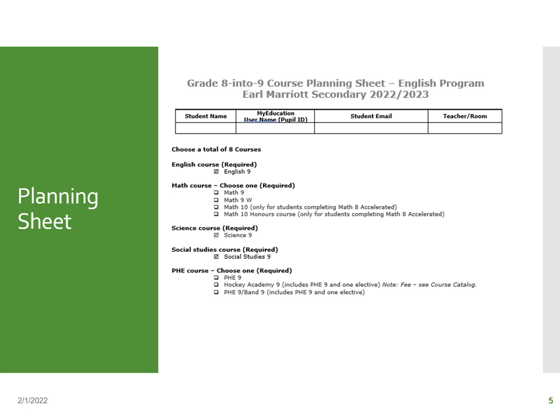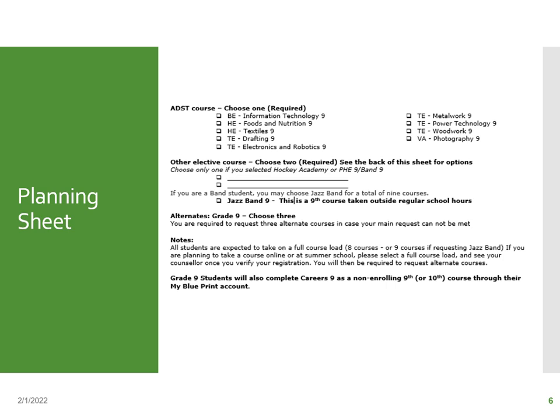You also have the option of doing PE with Band, and again that checks off two spots as well — PE 9 with Band because they alternate. Moving down the sheet, you'll see the ADST course section. You need to choose one of these, as it satisfies the ADST credit requirement. After that, you'll choose two more electives from the back of your course selection sheet — but only if you are not taking Hockey Academy or Band. If you've chosen hockey or band, you only pick one additional elective.